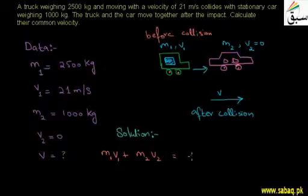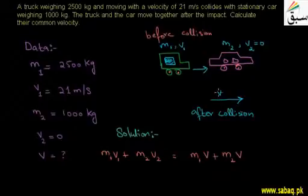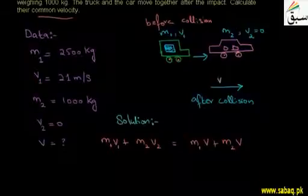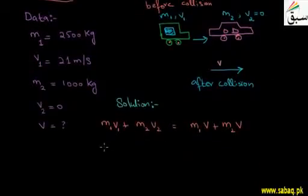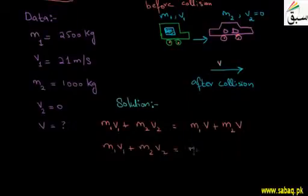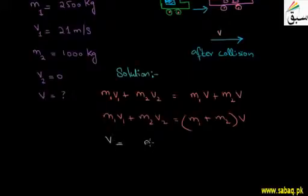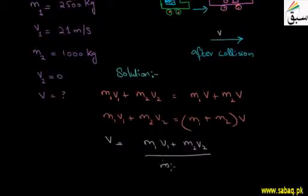After the collision, the momentum is M1·V + M2·V, since the final velocity is the common velocity V. Because their masses are different but velocity is common, we write M1·V + M2·V. Simplifying: M1·V1 + M2·V2 = (M1 + M2)·V. Therefore, V = (M1·V1 + M2·V2) / (M1 + M2).